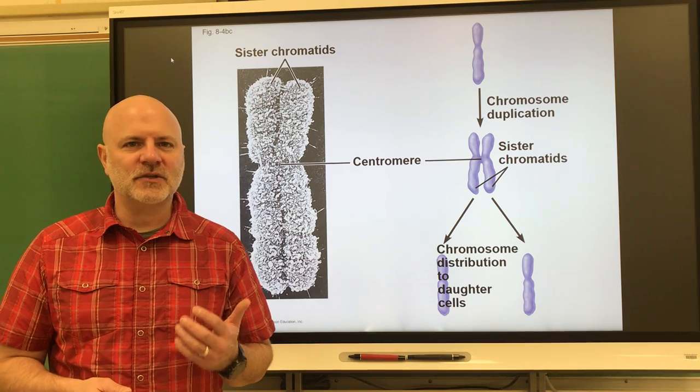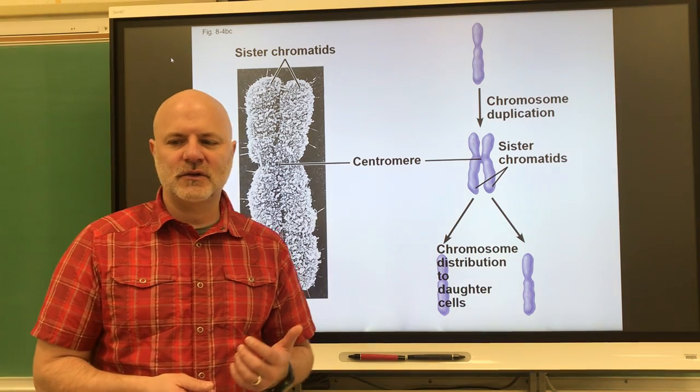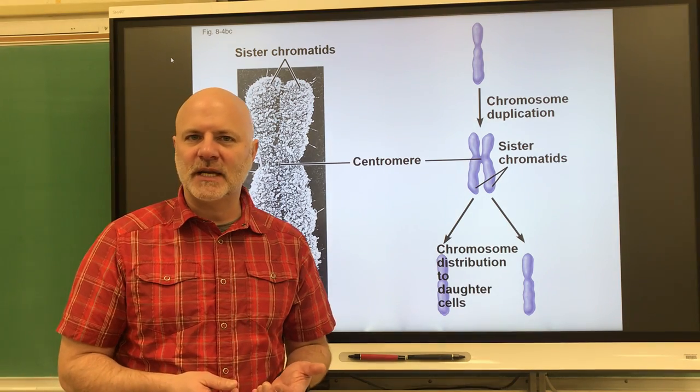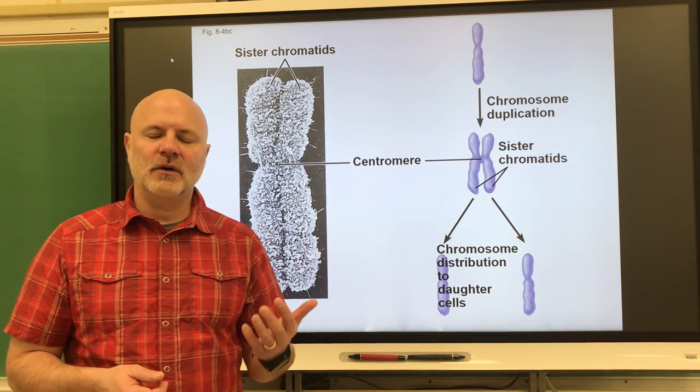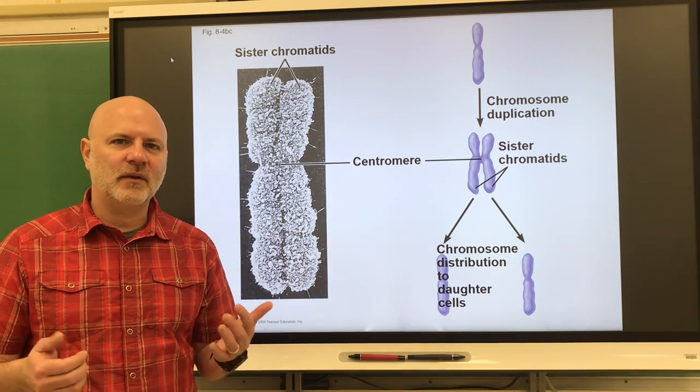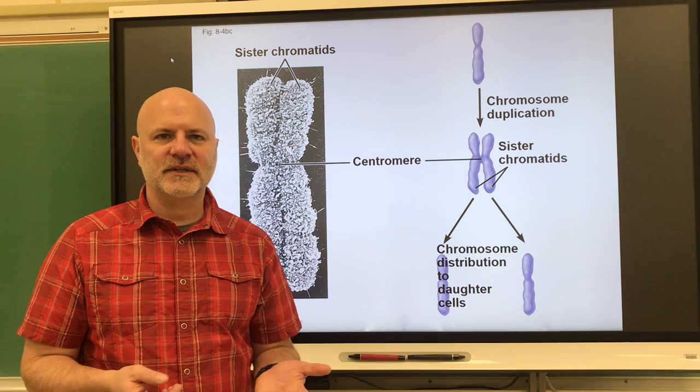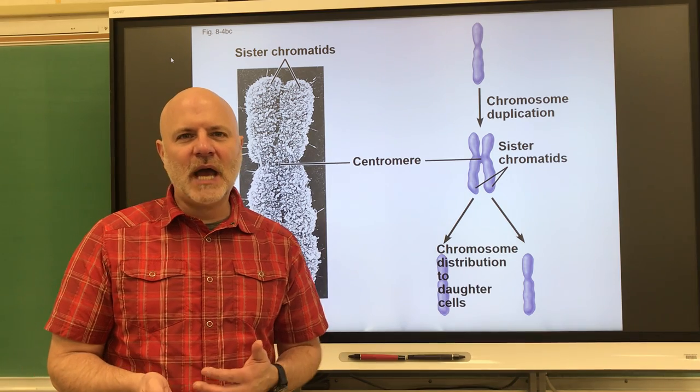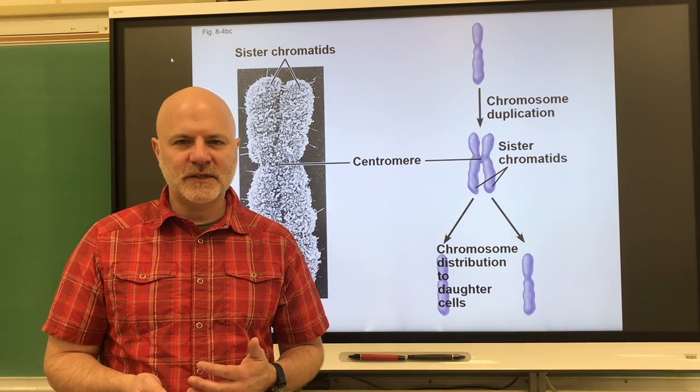The diploid condition is found in somatic cells — these are typical body cells, like a liver cell, brain cell, and muscle cell. It is not found in gametes.